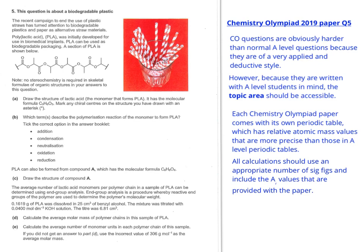So therefore any calculations that you happen to do should use an appropriate number of significant figures. You can use the least sensitive number of significant figures in the question and then include the relative atomic mass values that are provided with the paper. So when I do the calculations in the latter part of this question, I'll be using values that are from the actual period table that this paper came from. You can easily download the Chemistry Olympiad 2019 paper from the RSC website if you wanted to have a copy of the periodic table in front of you.